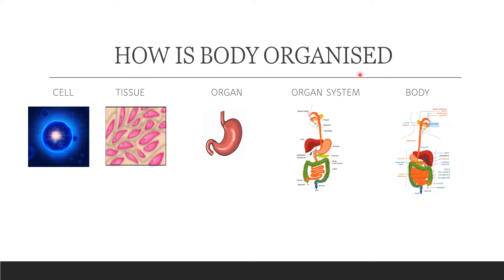How is our body organized? First is the cell — this is the basic structure of life. Then tissue — a group of similar cells performing a specific function. Then organ — a group of tissues which together perform a specialized function. Then organ system — a group of organs in which each organ performs different functions, for example digestion, assimilation, and absorption in the digestive system. Finally, the body, which is made up of different systems.